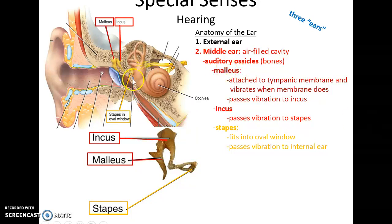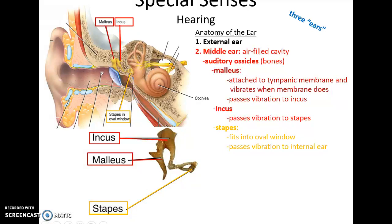That brings us to the middle ear. The middle ear is an air-filled chamber. It houses the auditory ossicles, or the bones in the ear. Attached to the tympanic membrane is the malleus. The malleus is also attached to the incus, and the incus is attached to the stapes. The stapes fits into a membrane structure called the oval window, which then transmits the vibration to the internal ear.